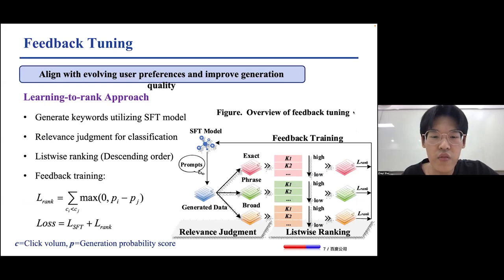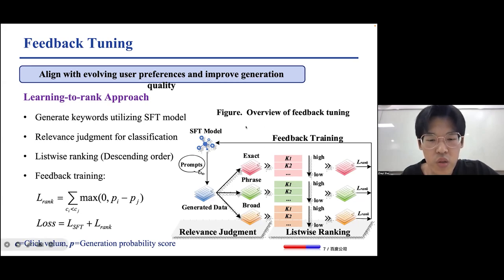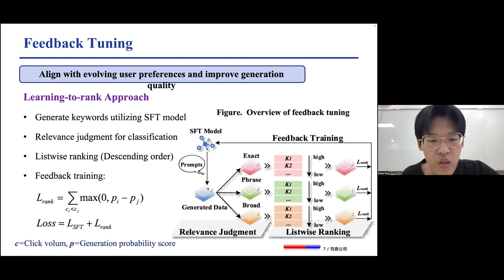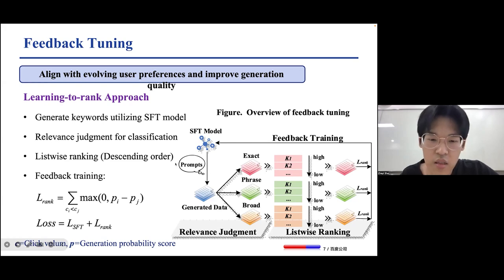We design a feedback tuning mechanism based on multiple search system signals to continuously align the model with evolving user preferences and improve generation quality. We adopt a learning-to-rank approach to provide comprehensive feedback. We utilize multi-match prompts to generate keywords using the SFT model and explore them as sources for feedback tuning. For the generated keywords corresponding to the same query, we classify them into different match types using the relevance judgment model to perform calibration. Within each match level, the keywords are ranked in descending order based on the number of user clicks, then reorganized as list-wise samples for feedback training.